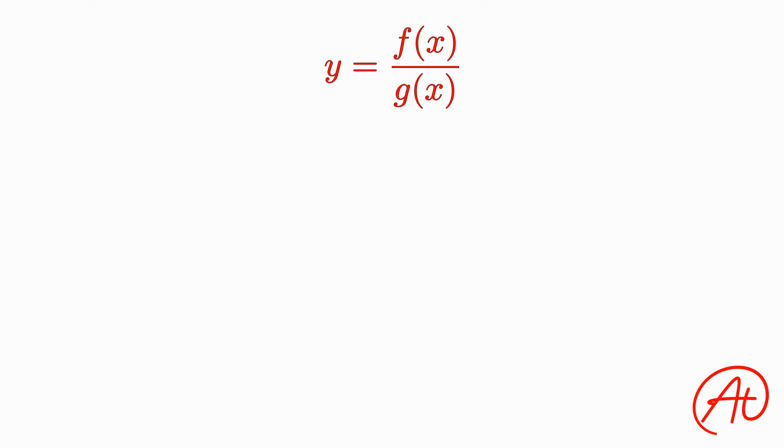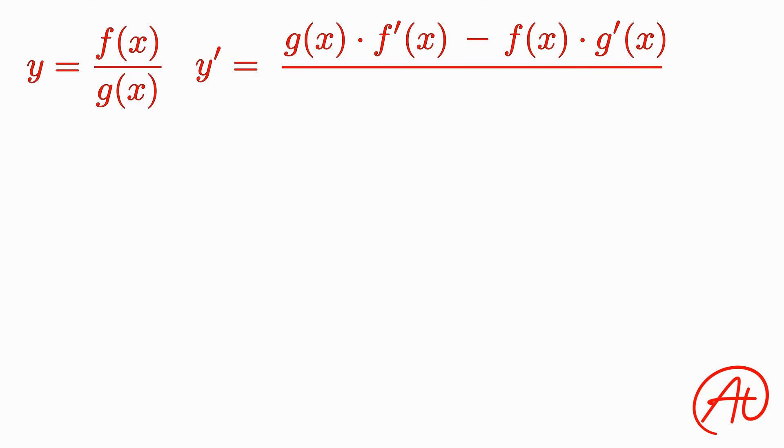Okay, so what is the Quotient Rule? In class, or in your textbook, you may have seen the Quotient Rule written like this, where the derivative is the bottom function times the derivative of the top function minus the top function times the derivative of the bottom function, all over the bottom function squared.